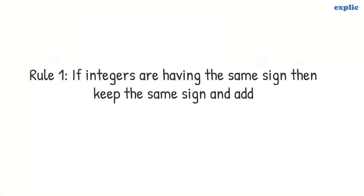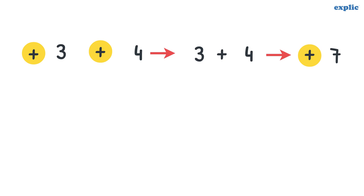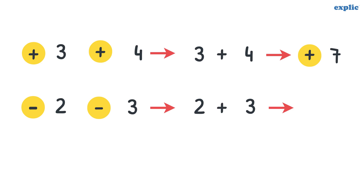Rule 1 says: if integers have the same sign, then keep the same sign and add. For example, plus 3 and plus 4 have the same plus sign. Hence add the numbers and keep the same plus sign — the answer is plus 7. Similarly, minus 2 and minus 3 have the same minus sign. Hence add the numbers and keep the same minus sign — the answer is minus 5.